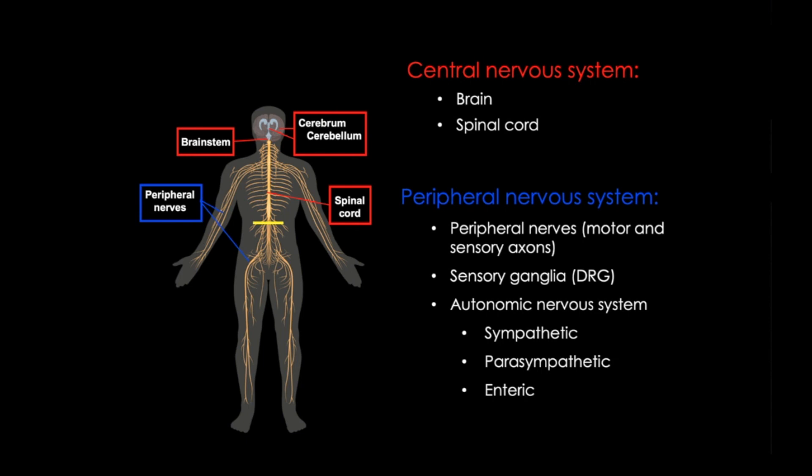Subdivisions of the autonomic nervous system include the parasympathetic and sympathetic divisions, and the enteric nervous system. Today, however, we're going to focus on the neuronal structures, their basic structure, function, and some histology.